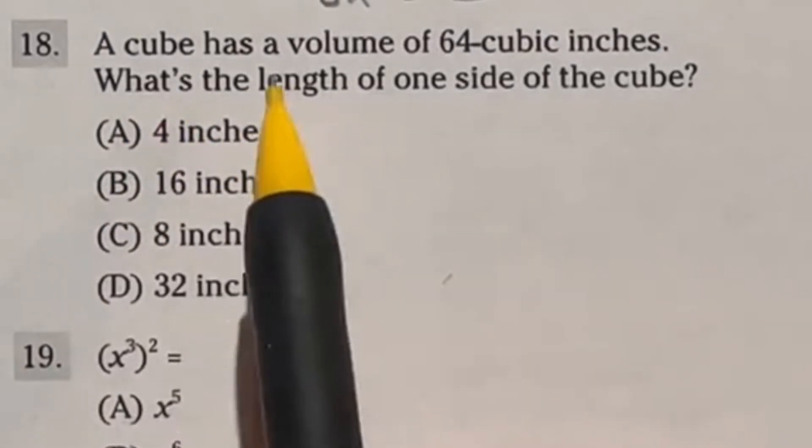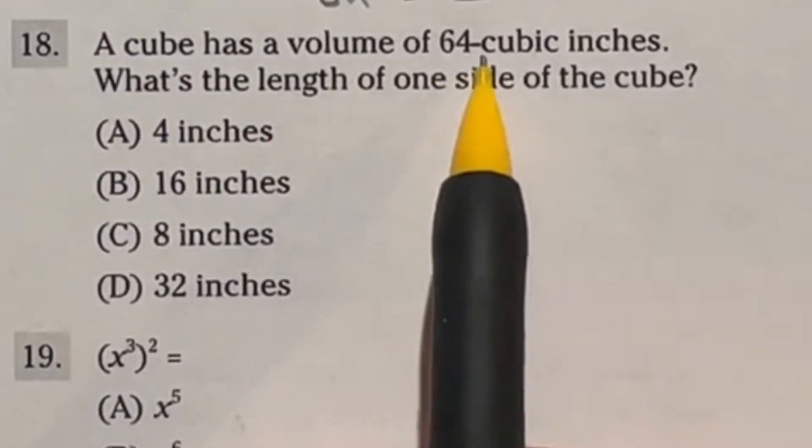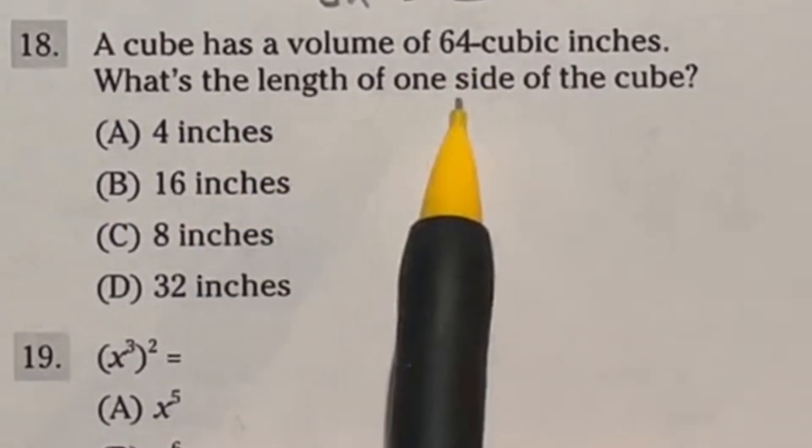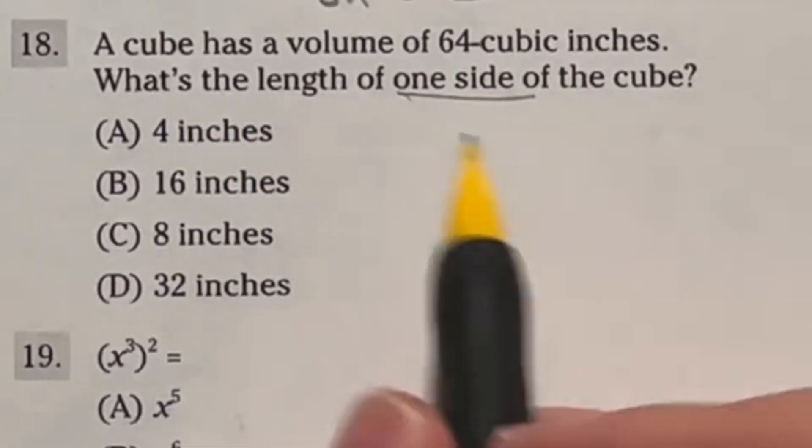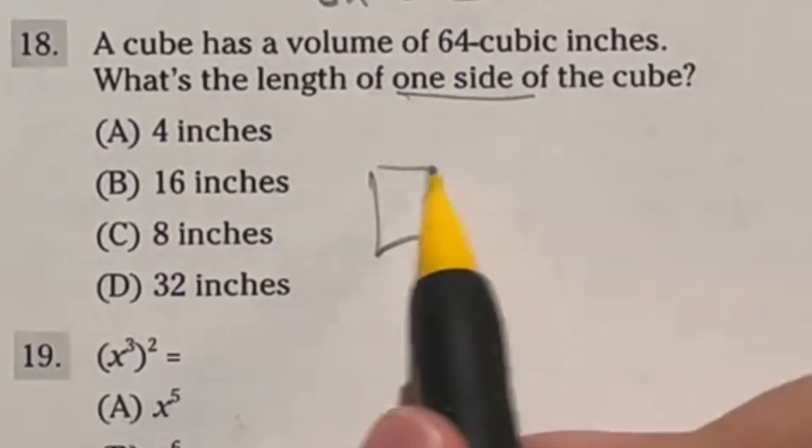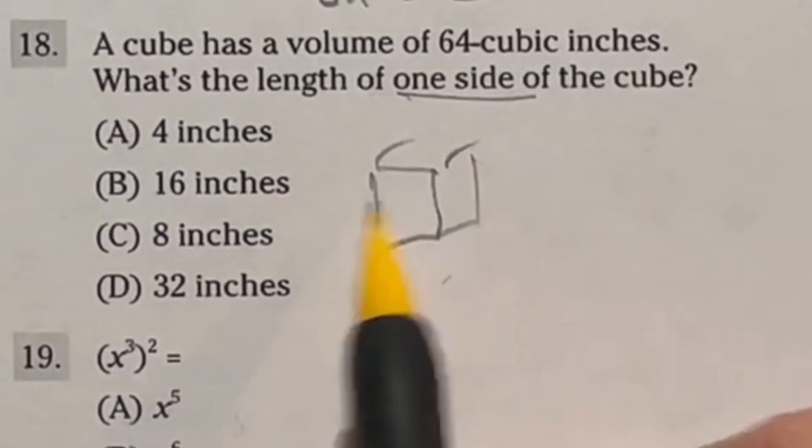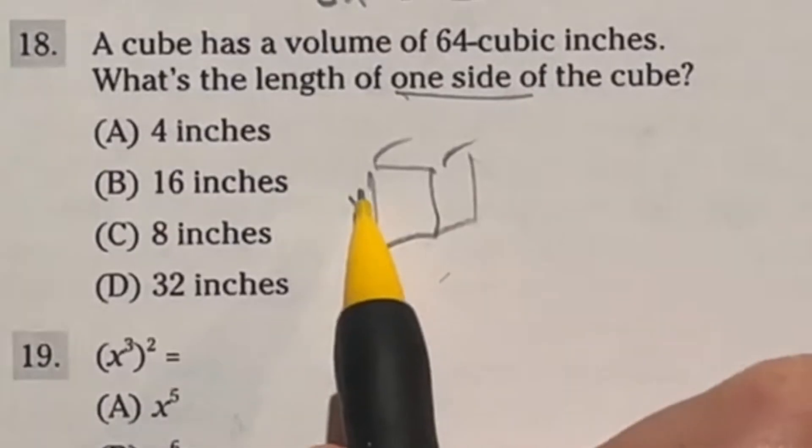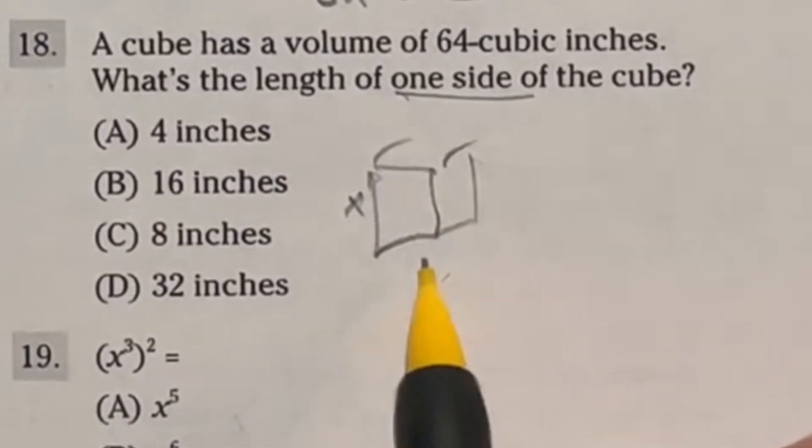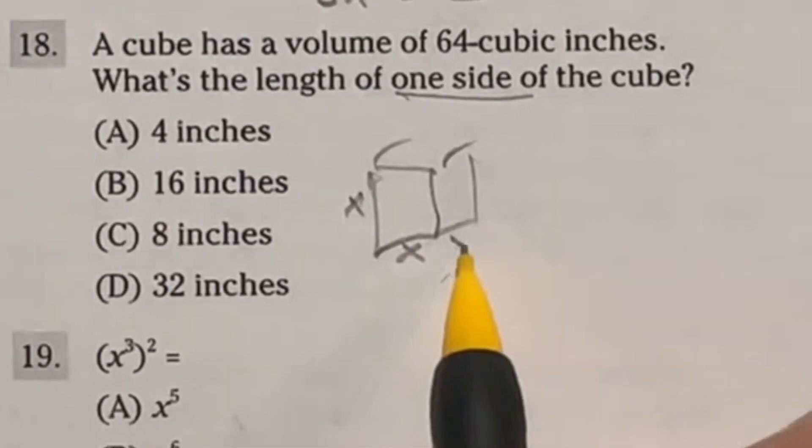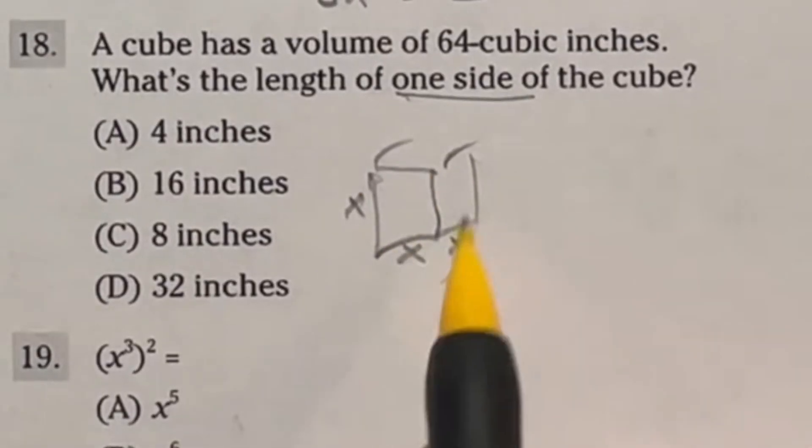Number 18 on the ASVAB says, a cube has a volume of 64 cubic inches. What's the length of one side of that cube? So we're looking at a cube here. There's my great picture of our cube. Now, with a cube, you have the same value here for the height of the cube, the length, the width, whichever ones you got to label them. Everything is the same value.